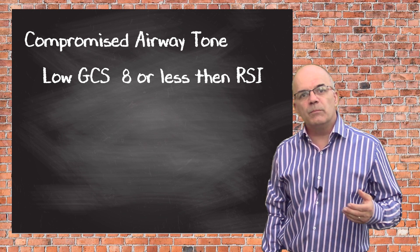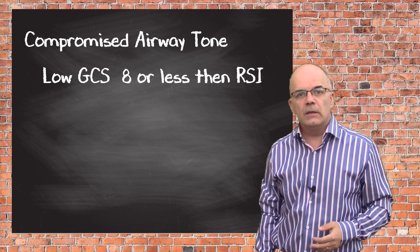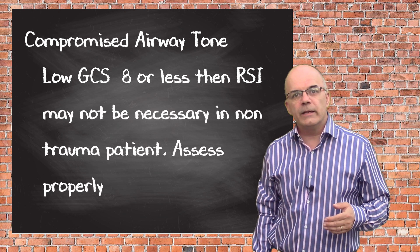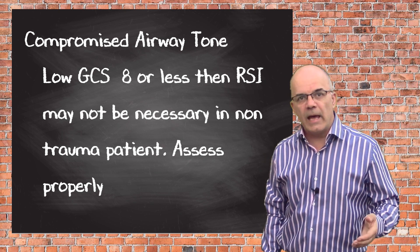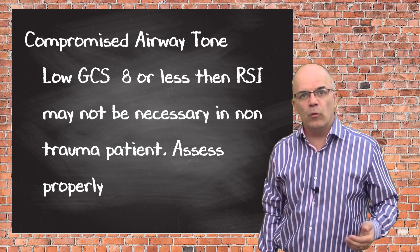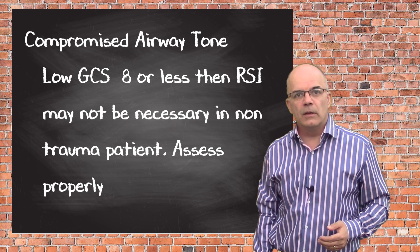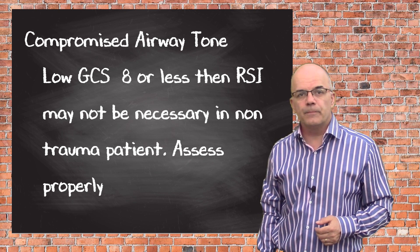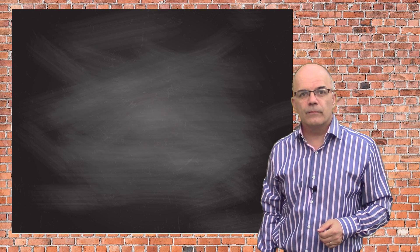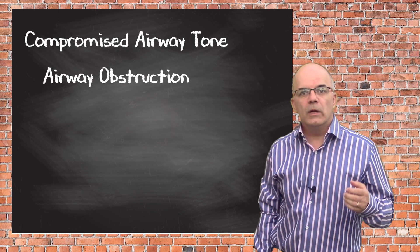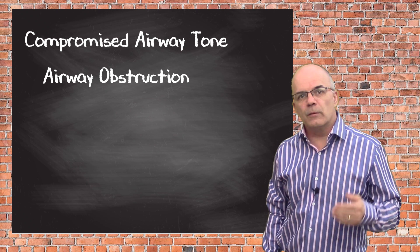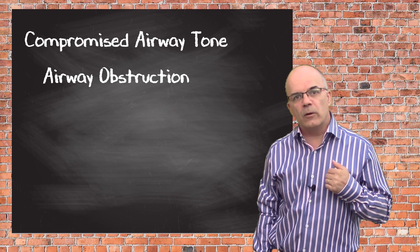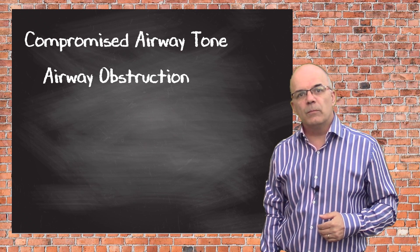It is important in these cases, however, to assess the patient more fully, having some awareness that their airway may not need such formal protection, and whether you are in the right environment to do it. The loss of airway tone can result in an obstructed airway, as the soft tissues fall backwards, causing a blockage.